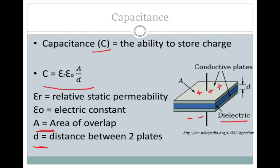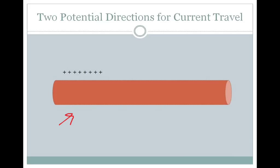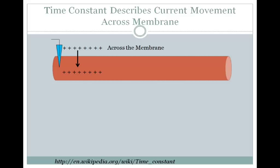If this is our axon here, and we have current or ions ready to flow, they can flow in one of two directions. First, the ions or current could flow across the membrane. Alternatively, they can flow through the axon, or through the cytoplasm, down along the length of the axon.